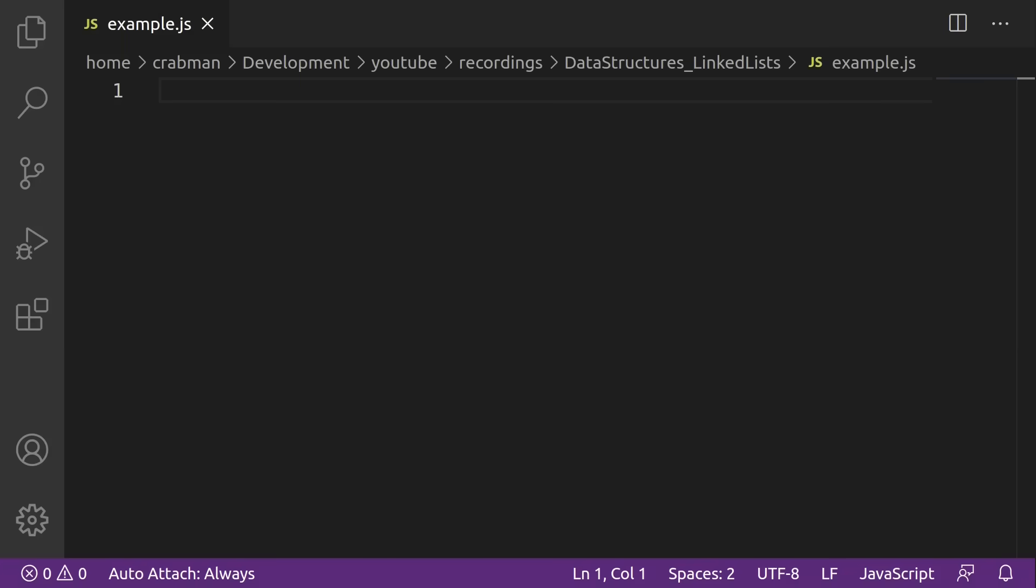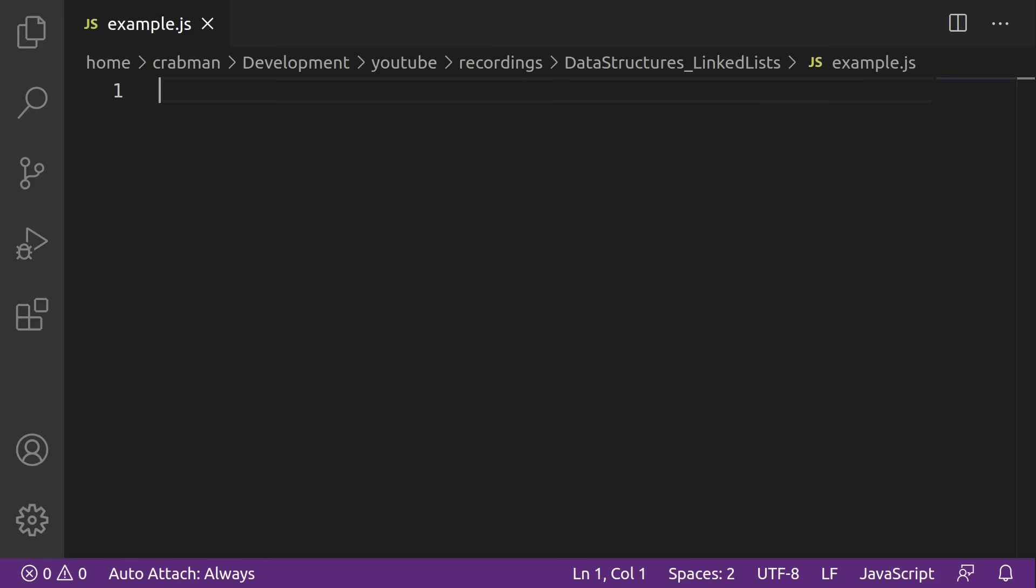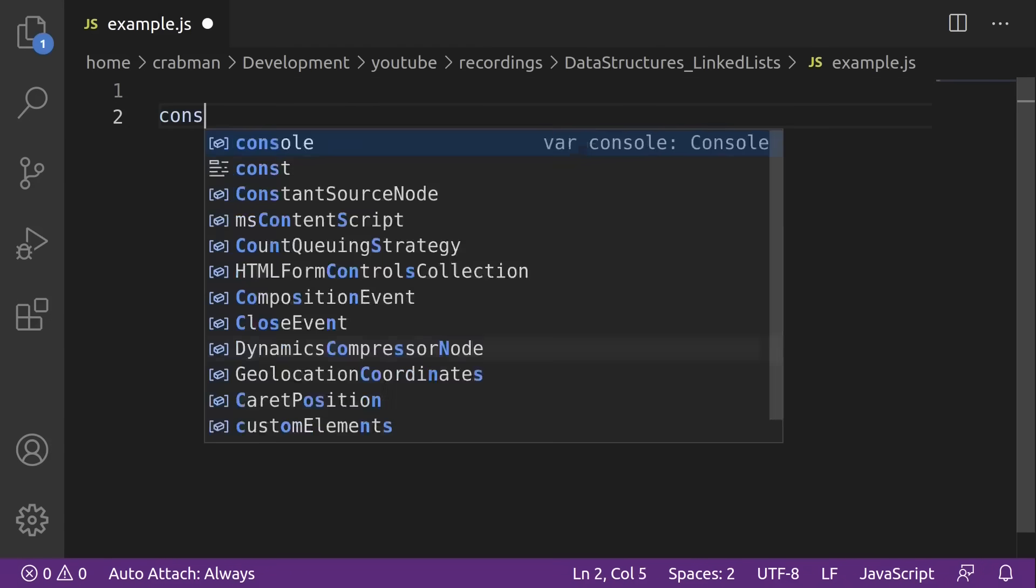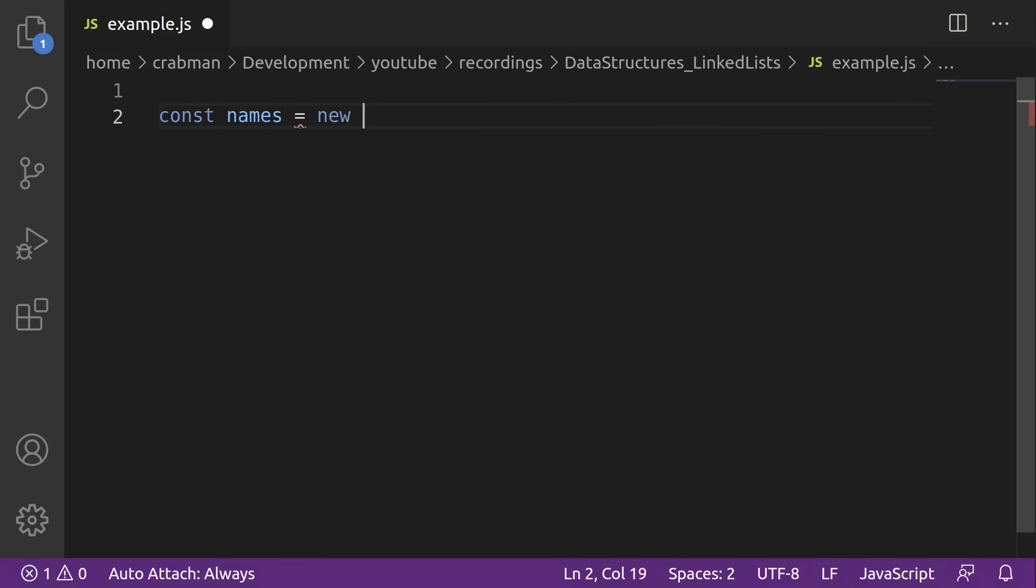What are linked lists? In the most simple terms, they're a way of storing several items at once. Typically in code, you'll have a situation like this where you want to store a bunch of junk. Let's pretend we have a linked list class, so const name equals new linked list,